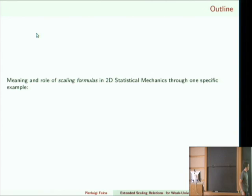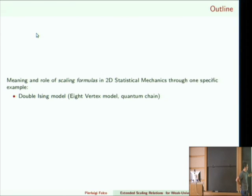This special example is the double Ising model, and this system is a sub-case of the 8-vertex model, quantum chain, and other models that are probably more famous. But I won't introduce those others — I will introduce just the first one because it's more general.